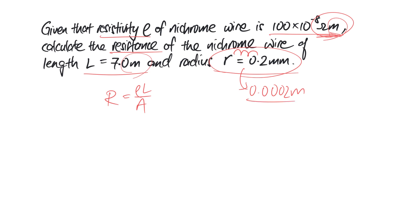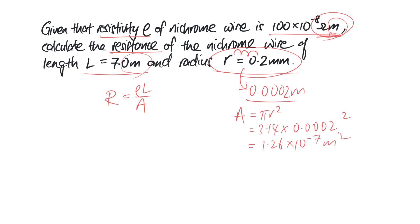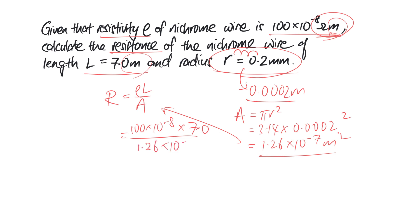So this is the radius, and we need to find — the first step is to find the cross-sectional area. Area is pi R squared, so it's about 3.14 times radius squared, and you get about 1.26 times 10 to the power of minus 7 meters squared. That's the first thing you must do correctly, then you substitute in the values. Just put in resistivity times length 7.0 meters and divide by cross-sectional area 1.26 times 10 to the power of minus 7 — if you key that into a calculator, you get about 56 ohms.